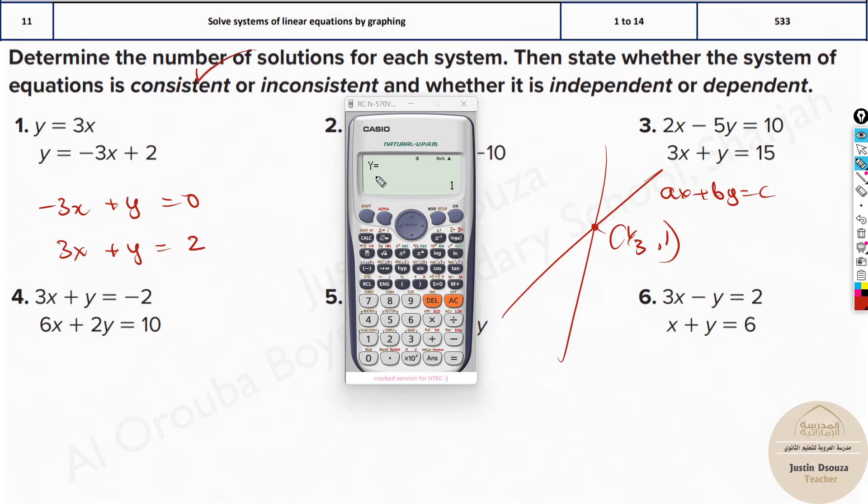Whenever you get a solution, it is consistent. But what is it? Dependent or independent? To know whether it's dependent or independent, you need to see how you get the answer. It's only one point, right? One answer. That means these linear equations touch at one point and never touch again. So they are independent.